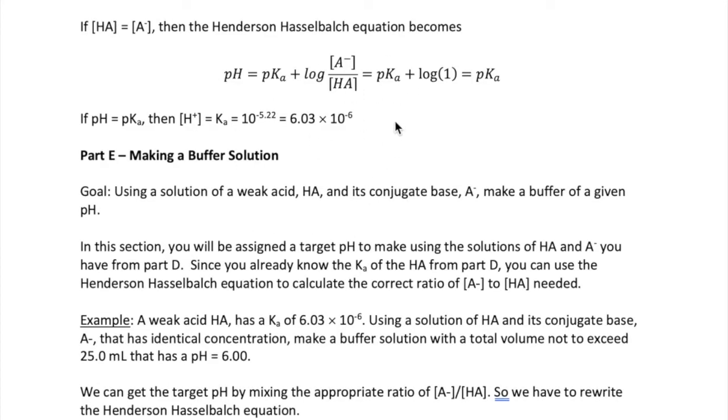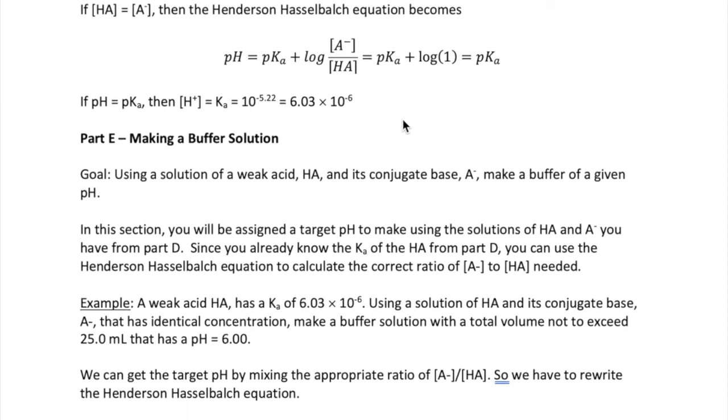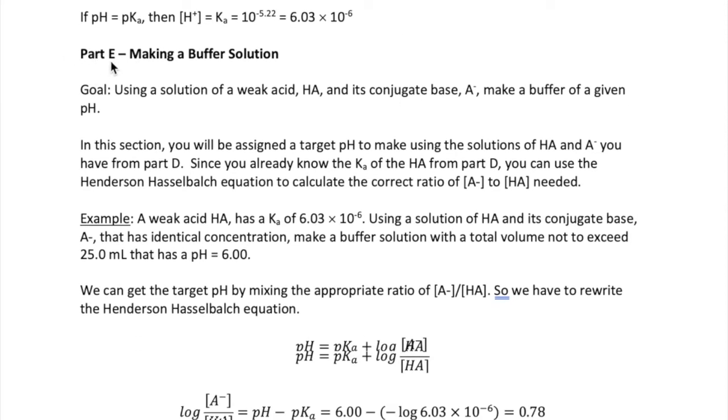Now, the last part of the lab, part E, is a continuation from part D. Using the solutions of A minus and HA and the Ka of HA that you just calculated, you're asked to make a buffer with a specific target pH.